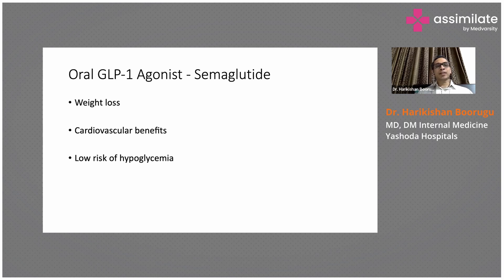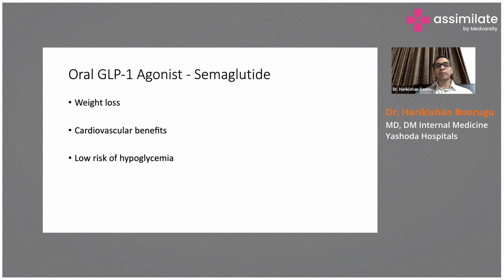Coming to the latest addition — oral GLP-1 agonist, oral semaglutide. Semaglutide is also available in injectable form and belongs to the GLP-1 agonist class. A key advantage is it causes significant weight loss. Many GLP-1 agonists are approved for weight loss even in patients without diabetes. They also result in weight loss beyond just bringing down sugars. They have cardiovascular benefits — data suggests that with some GLP-1 agonists, the risk of heart attacks comes down.